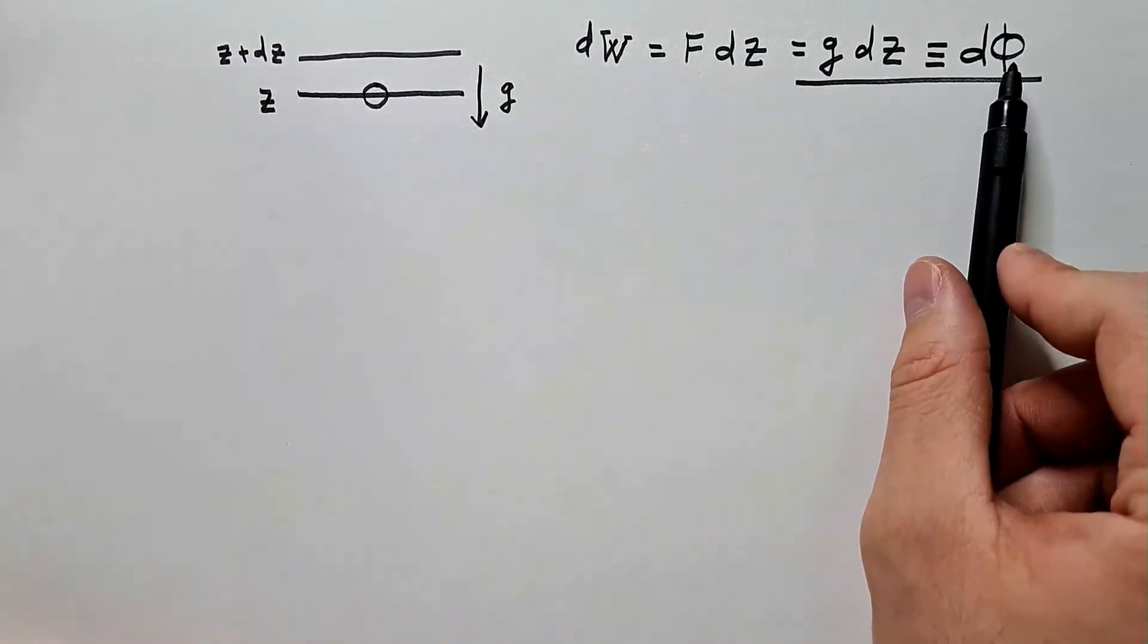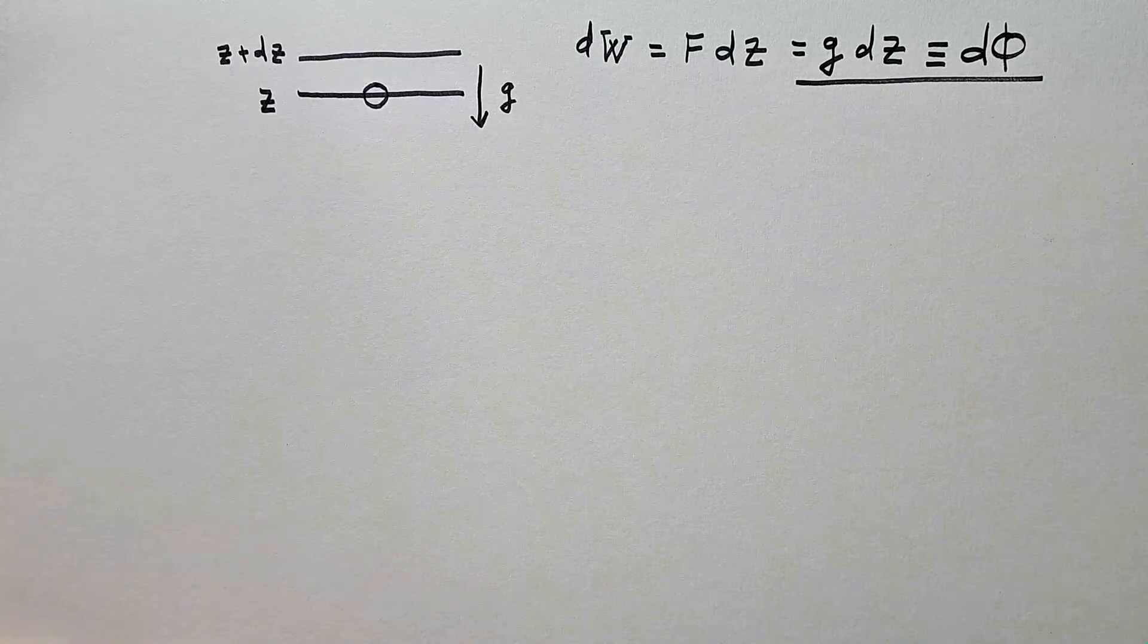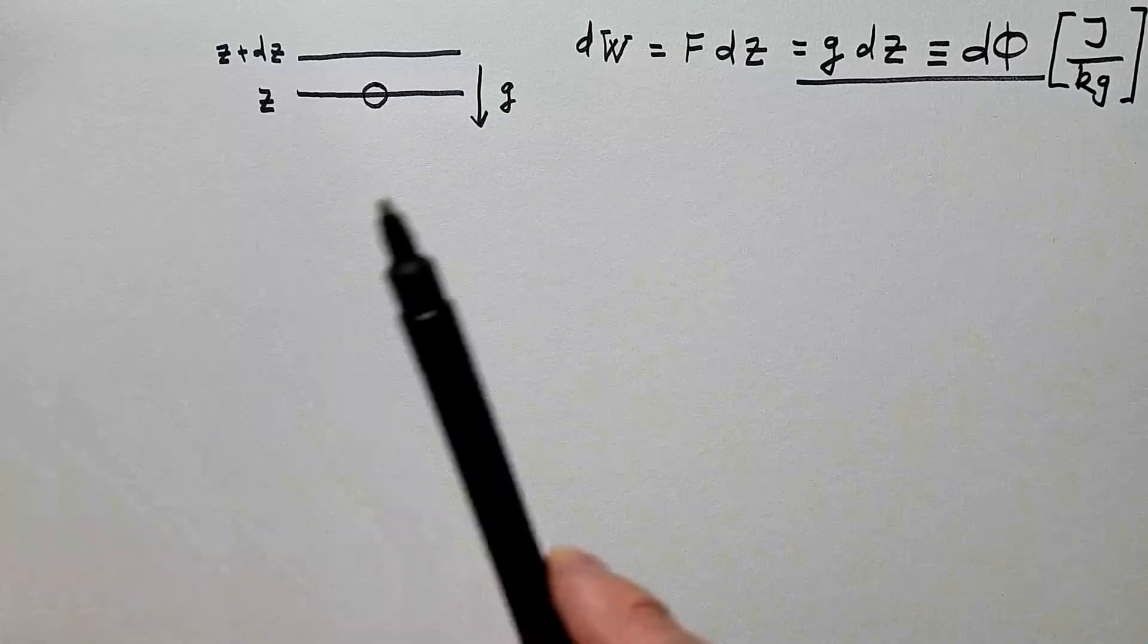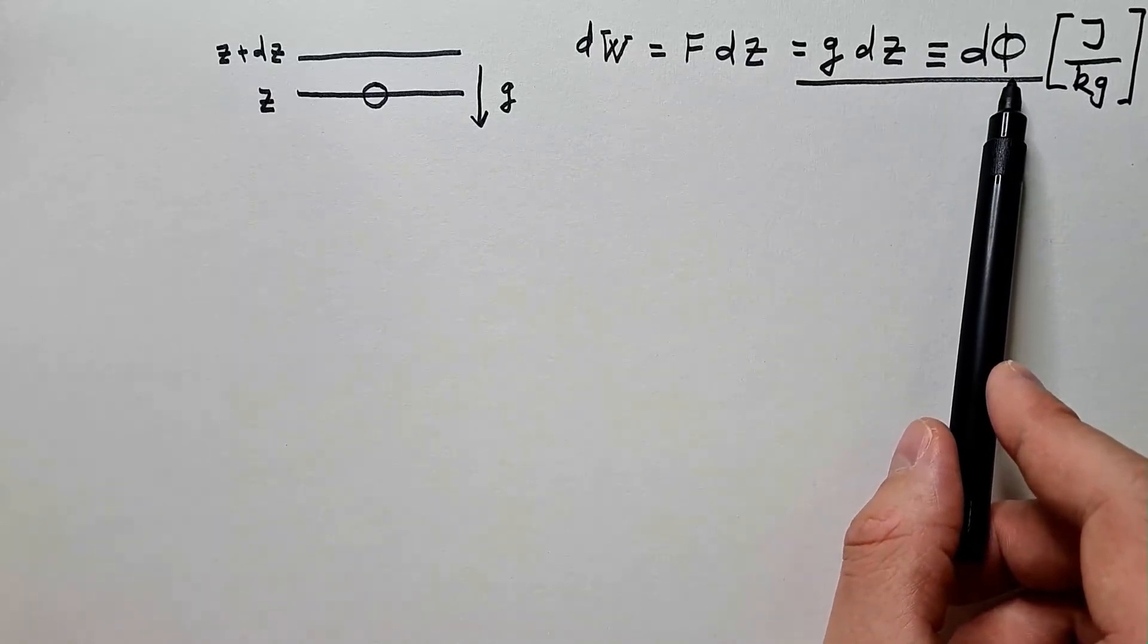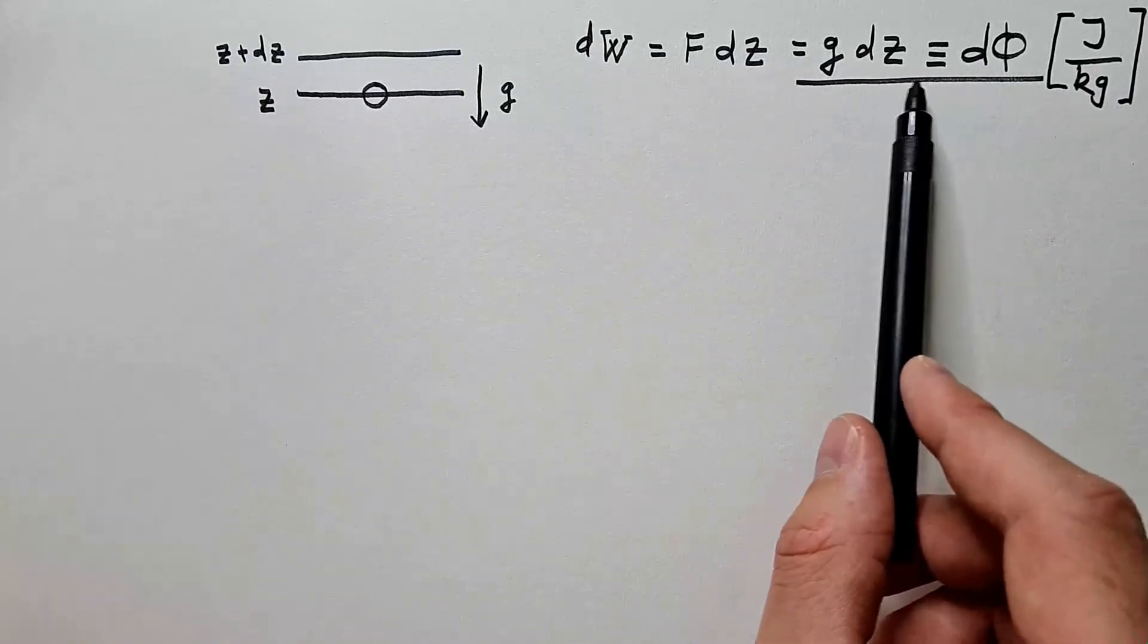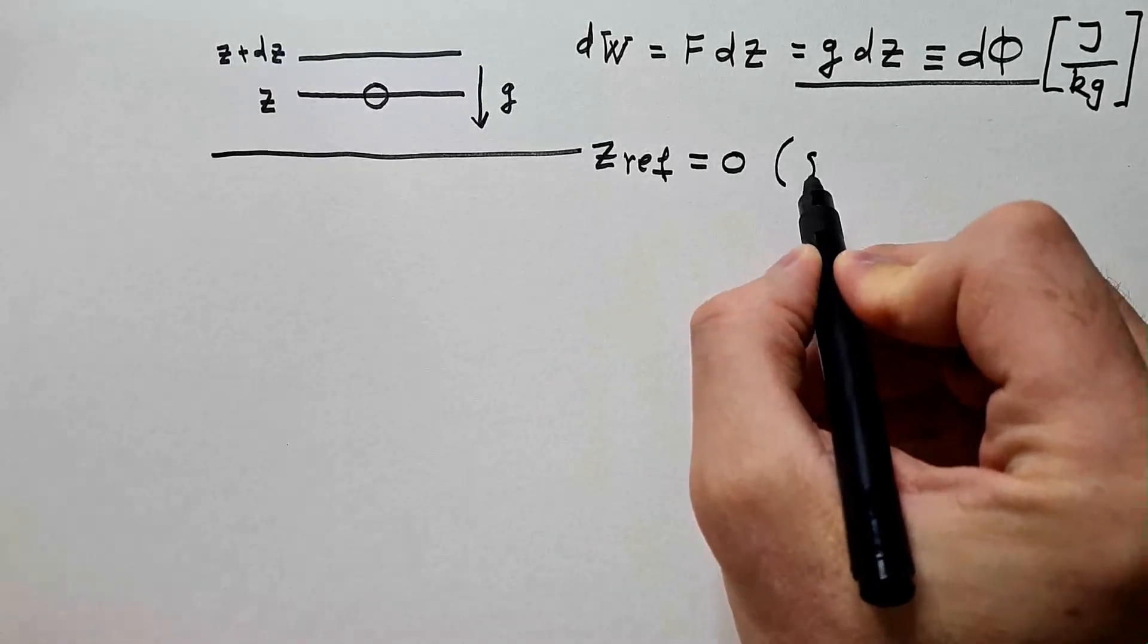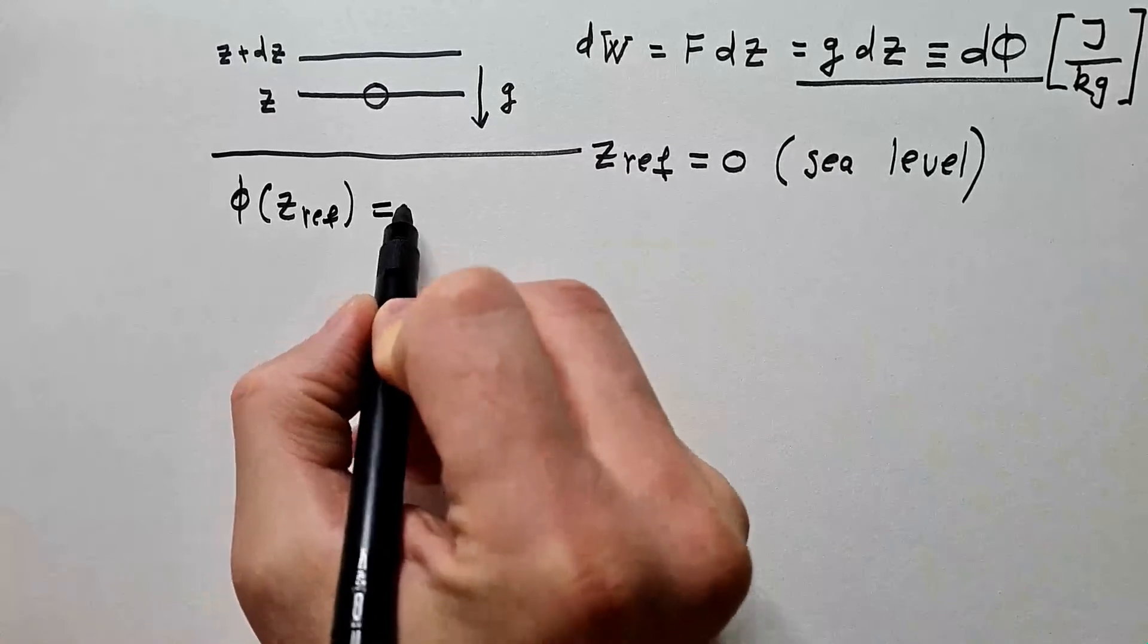So we can see how the geopotential d phi or df is related to work. You can also see that the units are joule per kilogram, which is also meter square per second square. We also see from this definition that if we want to find geopotential at any height, in other words, if we want to get rid of this differential form, we have to introduce reference height and then carry out integration of this equation. And reference height, let's call it zref, is by definition zero, and that is mean sea level. Geopotential at z reference is zero.